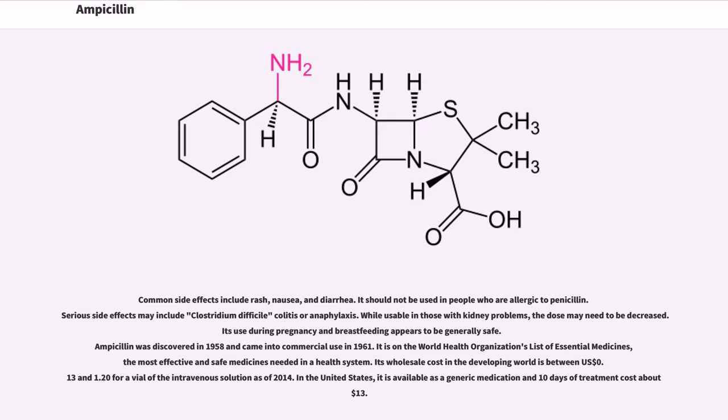While usable in those with kidney problems, the dose may need to be decreased. Its use during pregnancy and breastfeeding appears to be generally safe. Ampicillin was discovered in 1958 and came into commercial use in 1961. It is on the World Health Organization's list of essential medicines, the most effective and safe medicines needed in a health system.